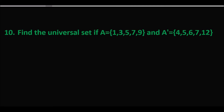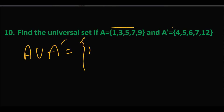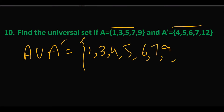Question number 10 में find the universal set if A and A complement दिया गया है। इसके लिए A union A complement जो है वो universal set बनाएगा। इन दोनों को combine करने पर universal set बनता है {1, 3, 4, 5, 6, 7, 9, 12}.